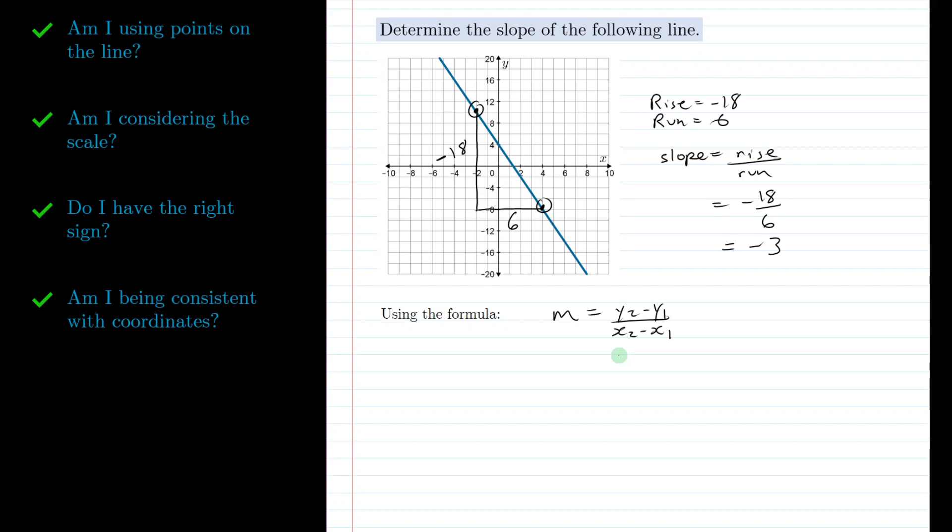But one of those points usually gets called point 1 and the other is point 2. And you have to make sure that you keep those labels consistent through your whole solution. Don't switch what point 1 and point 2 are halfway through or you're going to get a wrong answer. So our first point up here on the left was the point (-2, 10). Okay so that's what I'm going to call point 1 is (-2, 10).